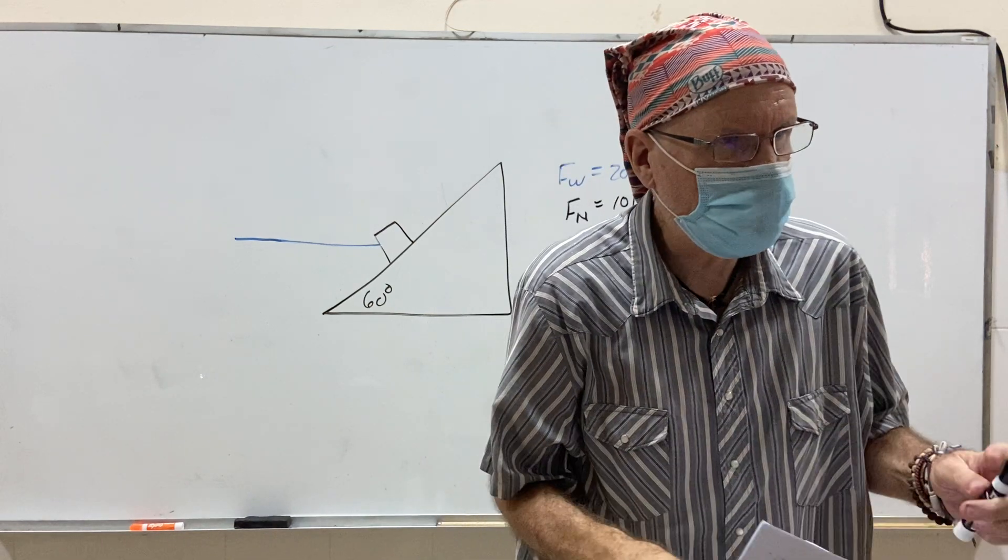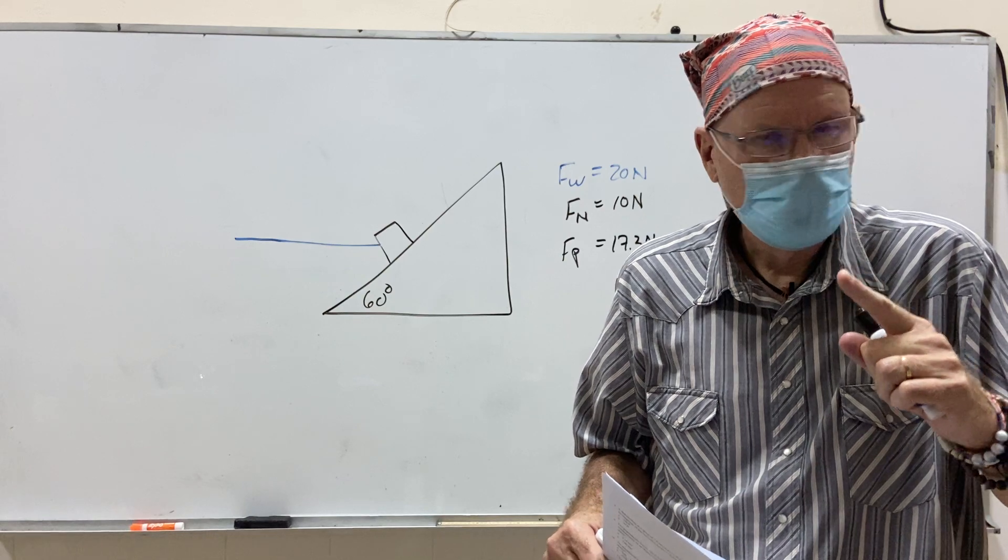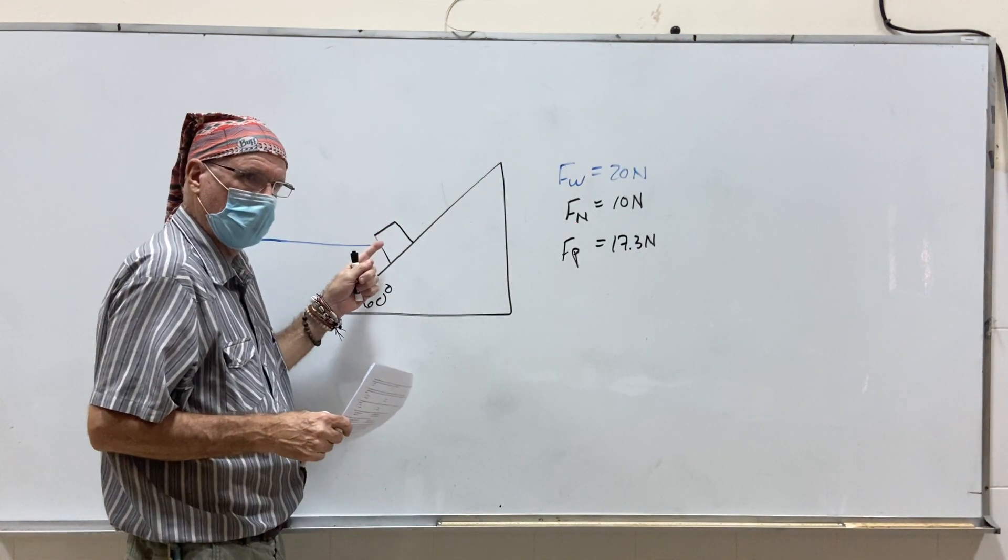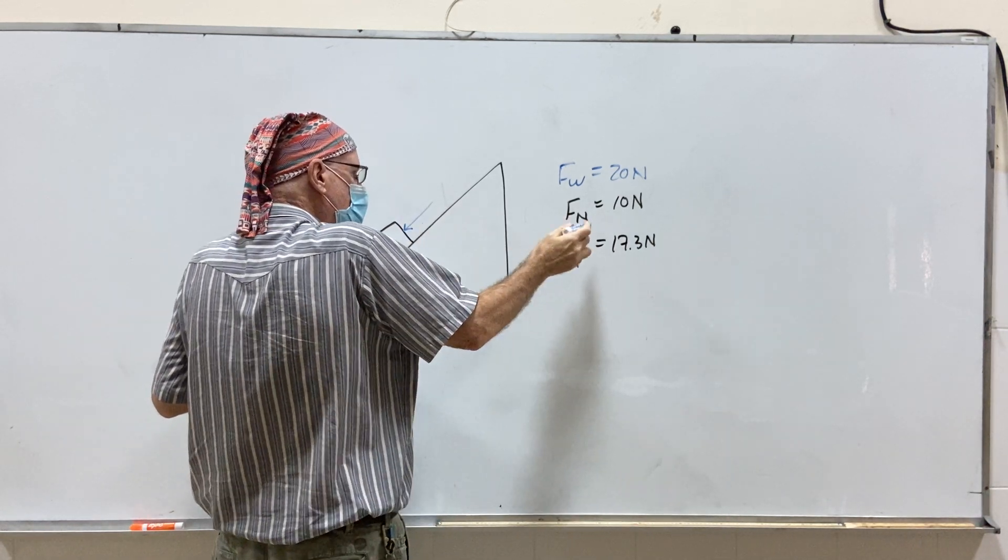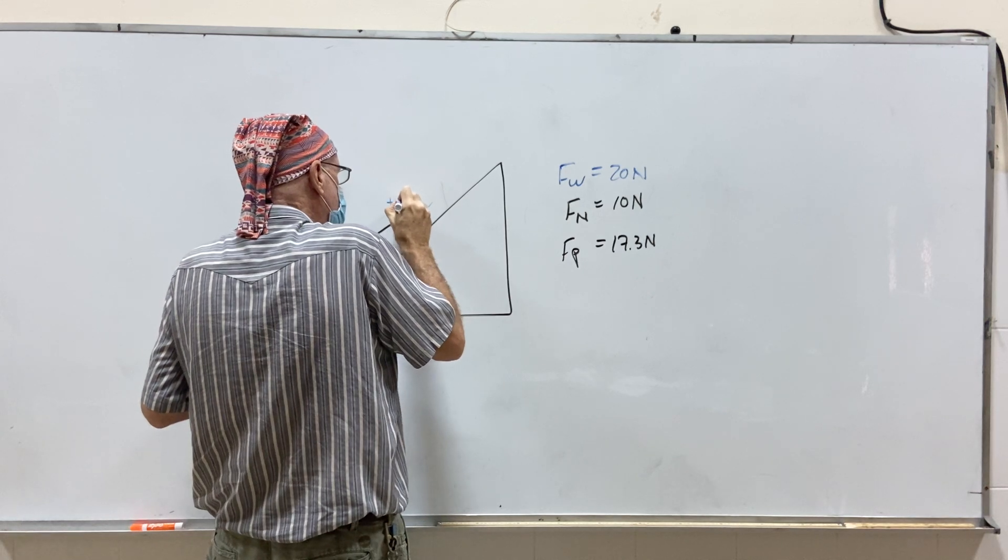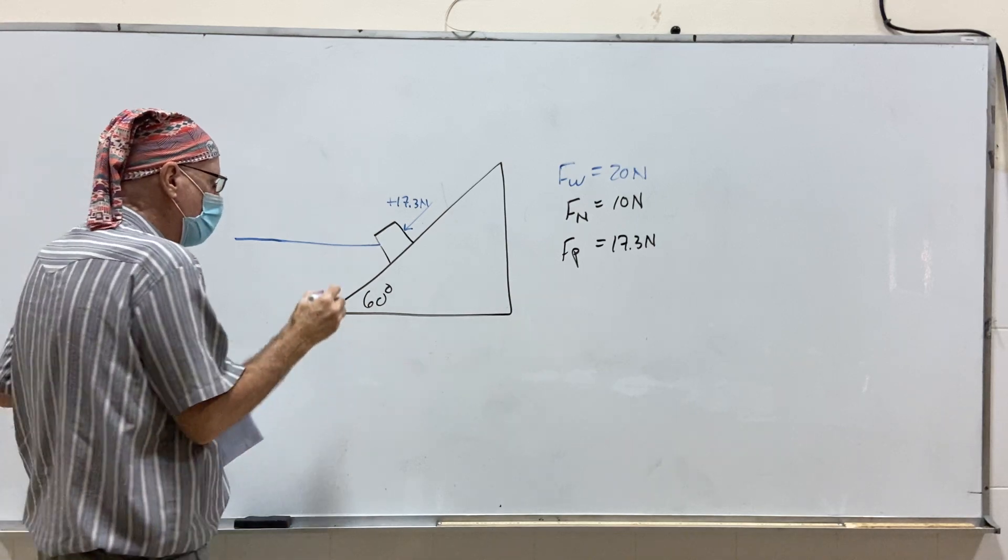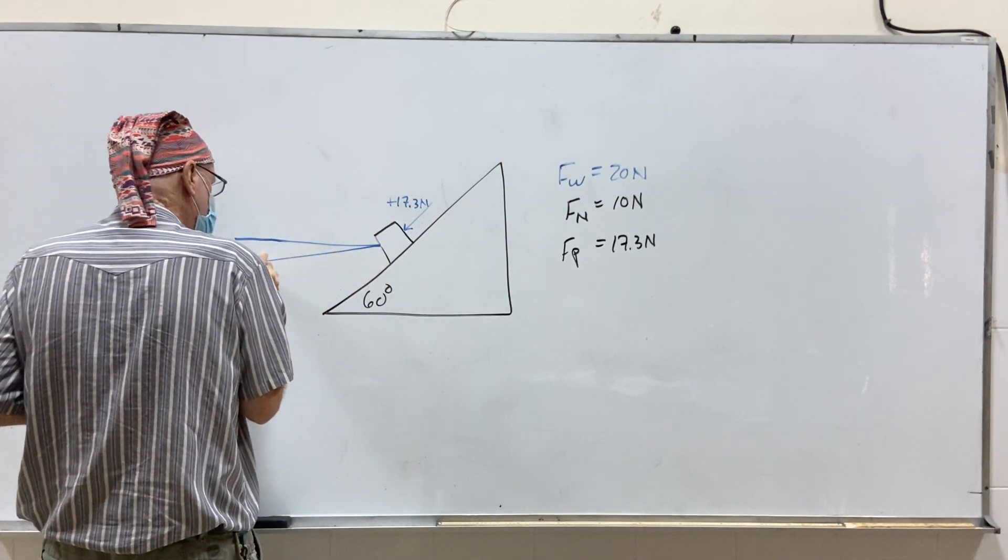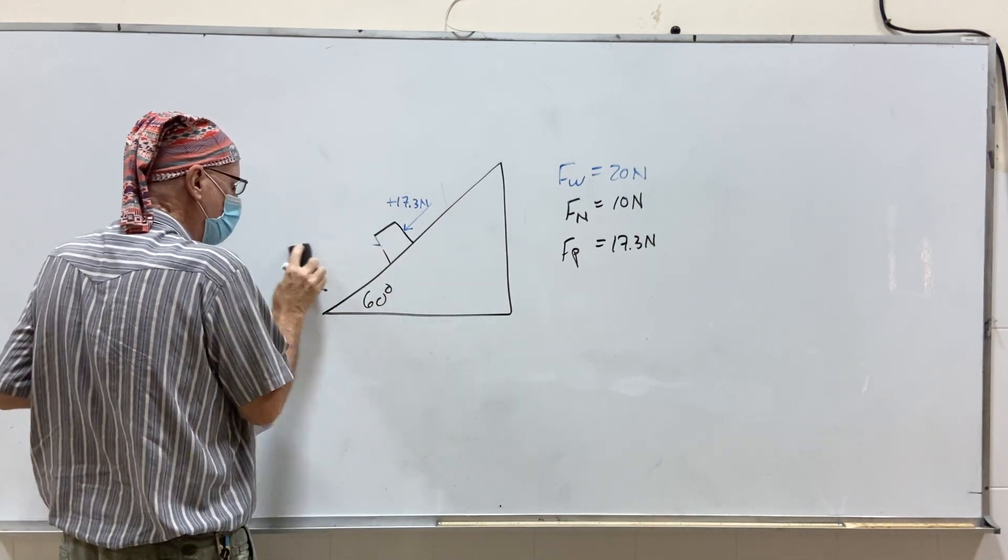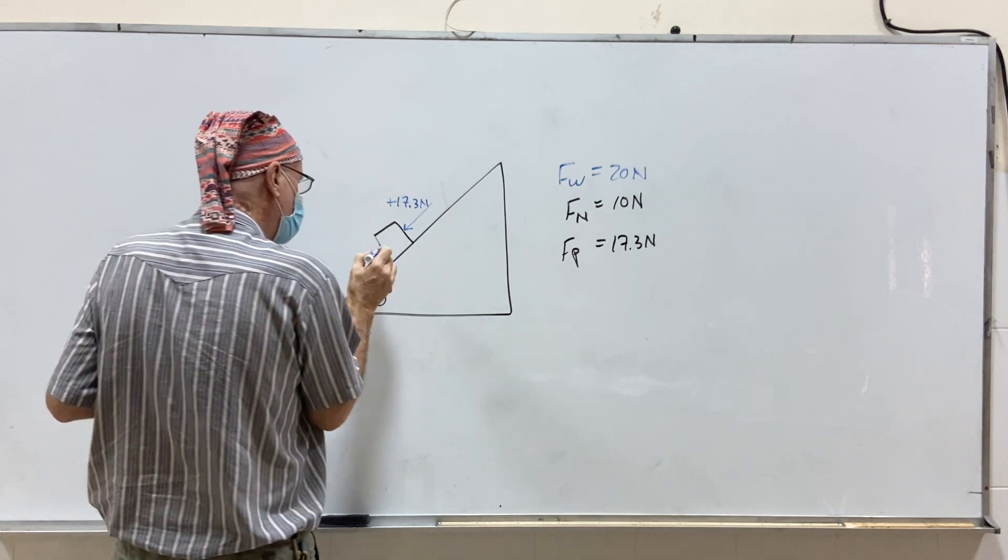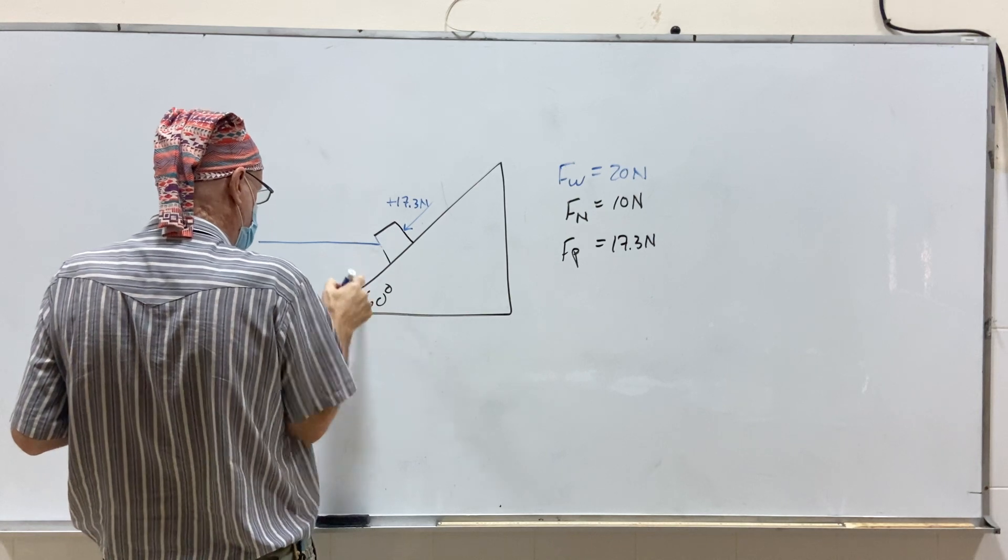Now, what does that mean? That means that the downward fp, and the artificially created upward fp, this is creating an fp upward. This fp here is plus 17.3 newtons, correct? Yes. Yes? This is hard to draw. So this, is that level with that? All right?